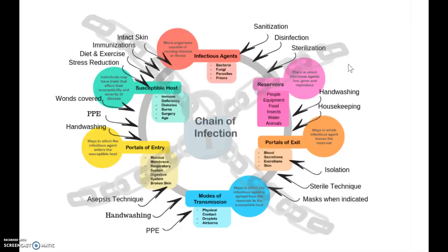Some good ways we can reduce the amount of infectious agents living in a reservoir: hand washing — as healthcare providers, hand washing is the number one way to prevent the spread of infection. And then just good housekeeping: if you use equipment on one patient, it needs to be cleaned before the next patient. Table paper needs to be changed, and use a basic disinfectant between patients.